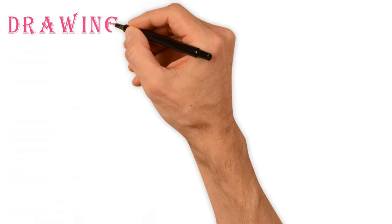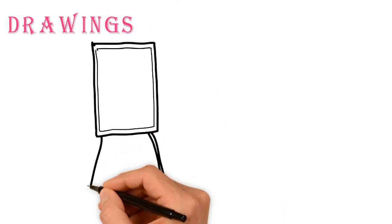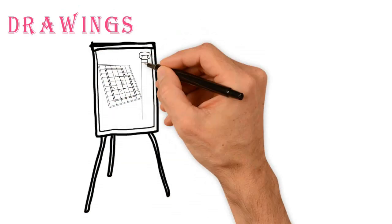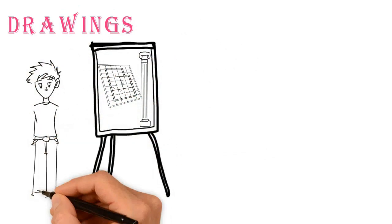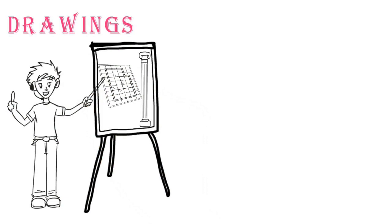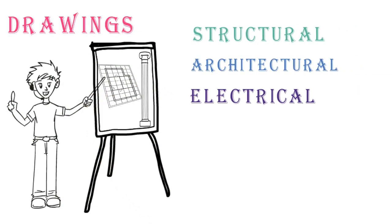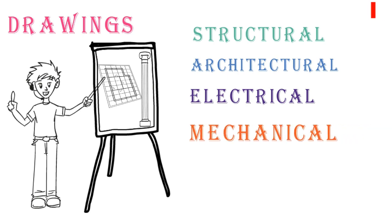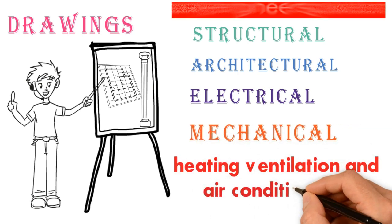Drawings. This is a plan or sketches of the project. The QA or QC engineer must read and study the drawings carefully. The drawing has four categories: structural, architectural, electrical, and mechanical — including heating, ventilation, and air conditioning.